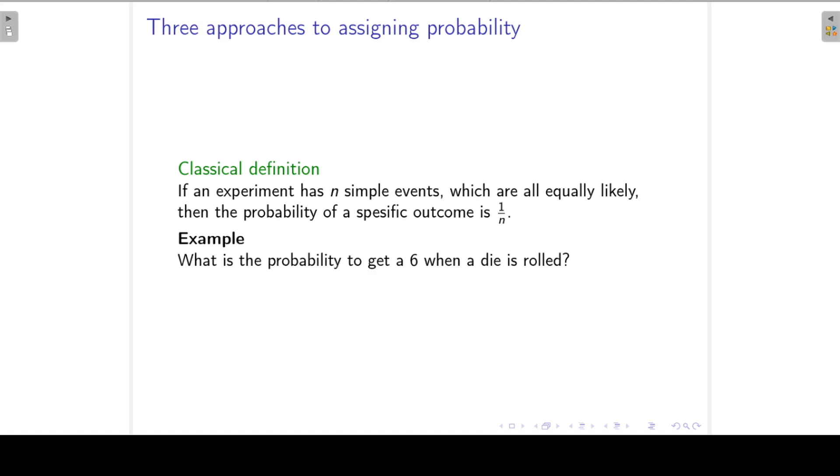Let's look at this example. When we roll a die, what is the probability to get any specific outcome? Let's say a 6. We know that there are six possibilities, six simple events in this sample space. They are all equally likely. So the probability to get a 6 or a 3 or a 2 is just 1 over n, in this case 1 over 6.